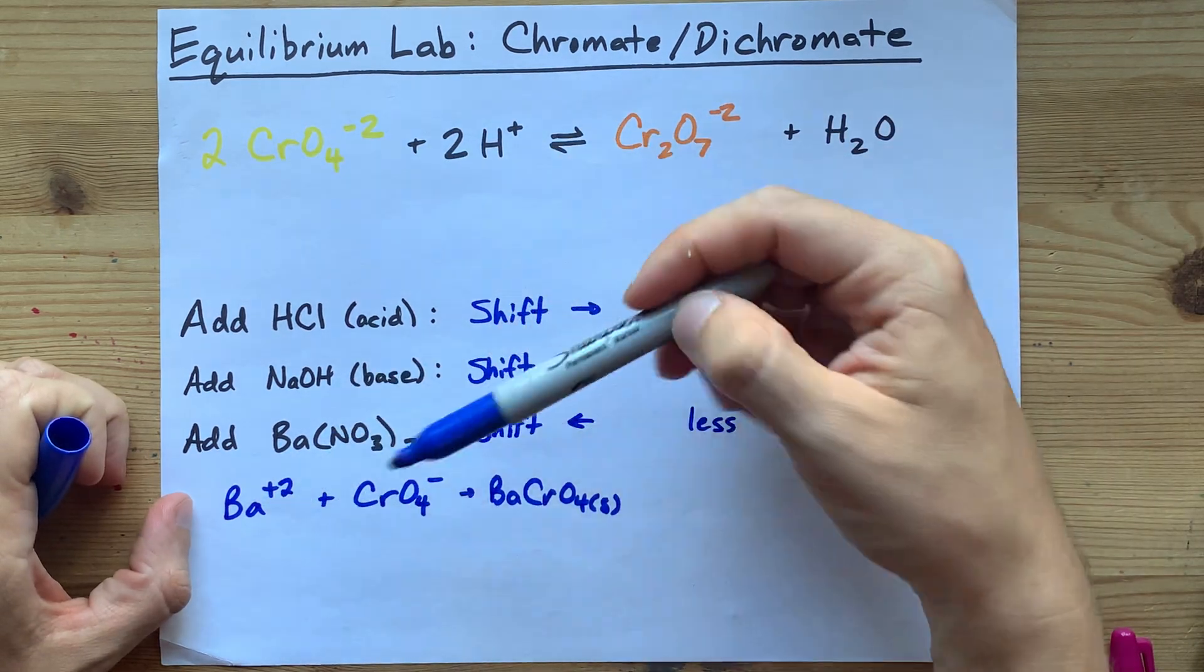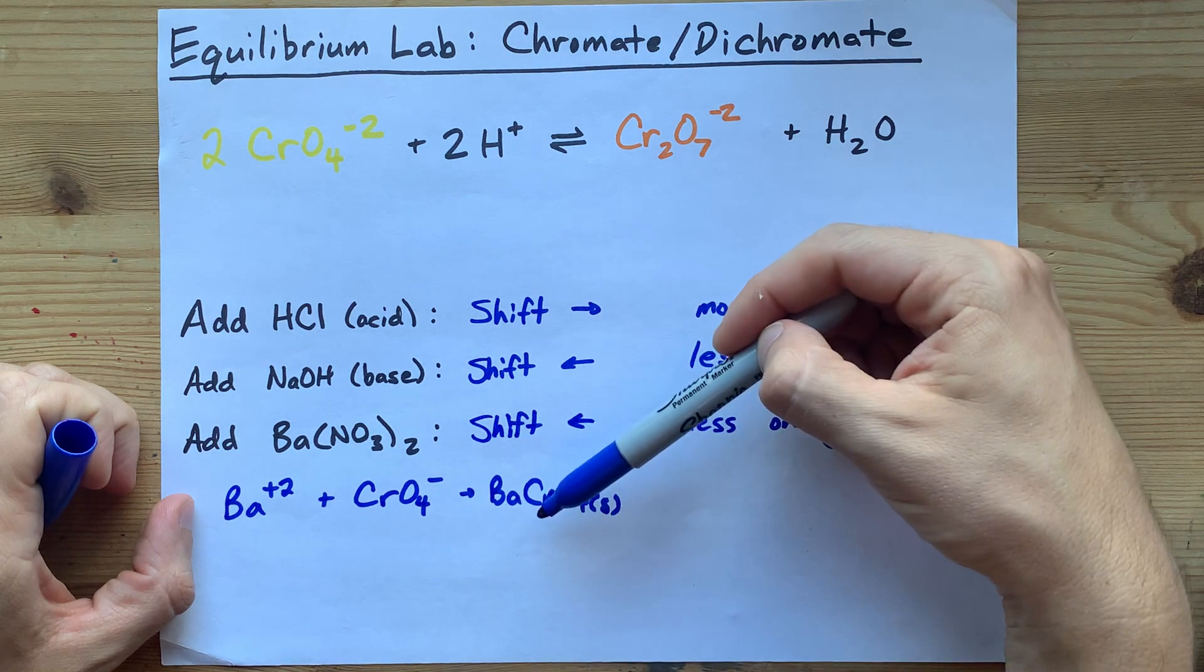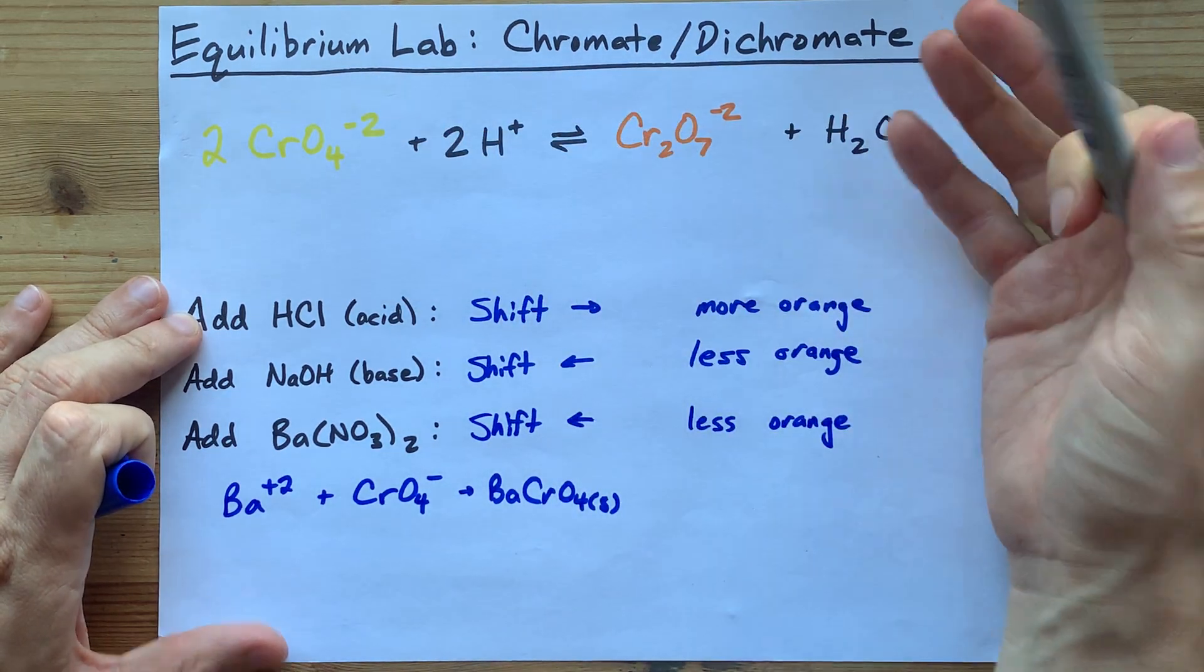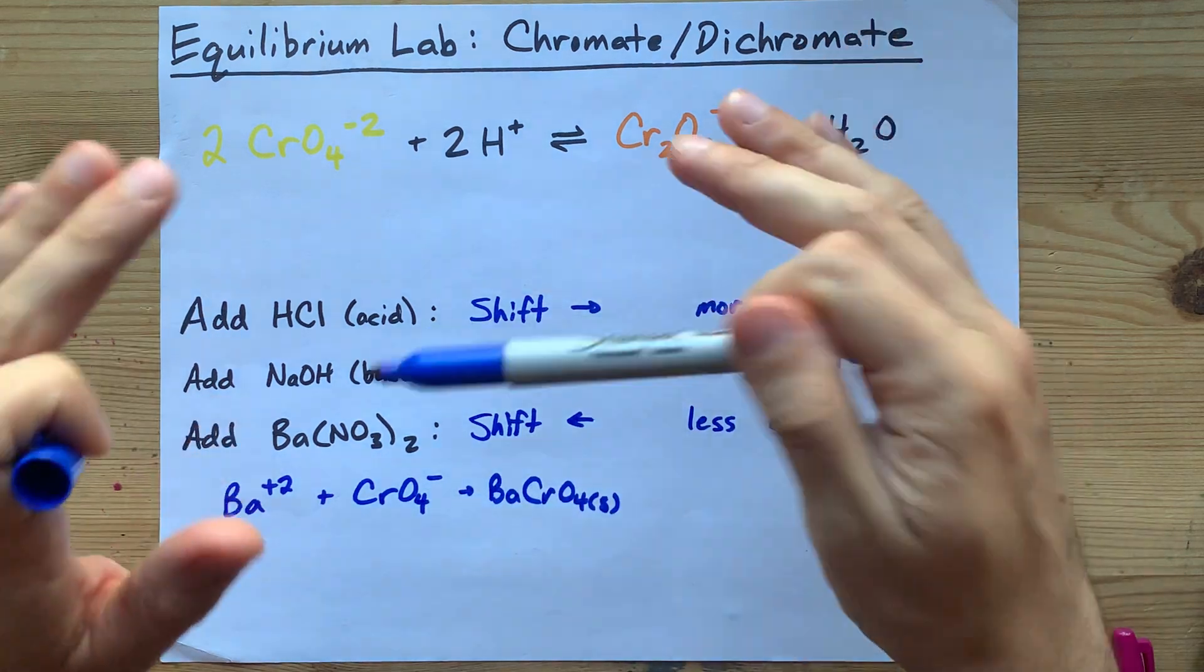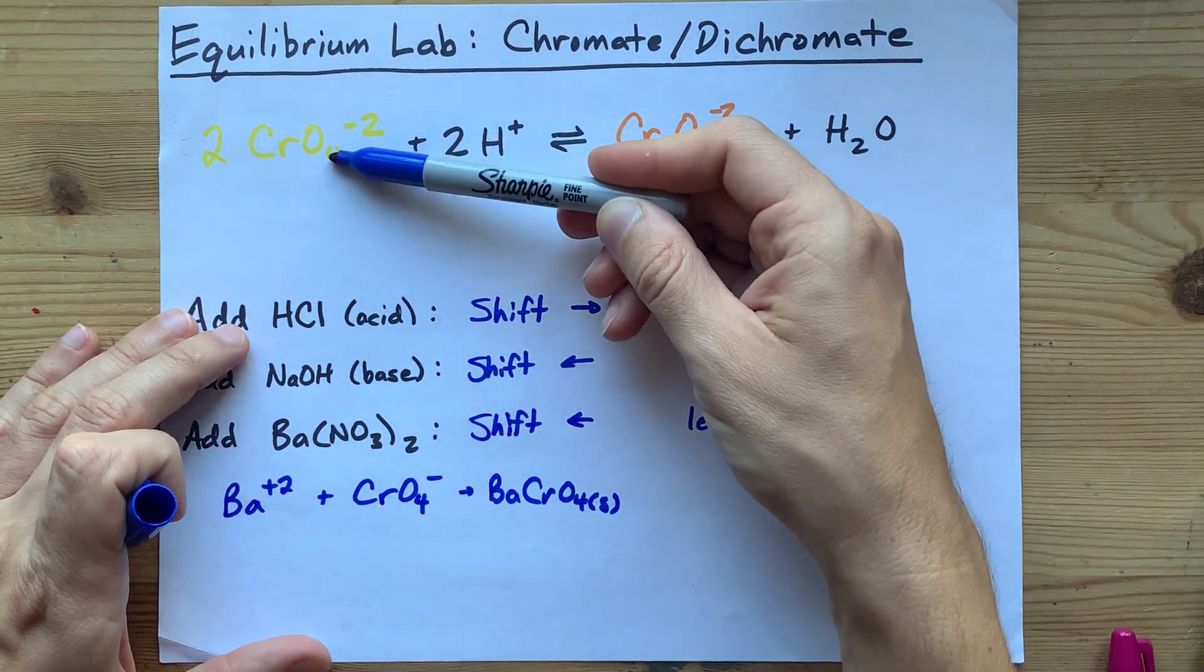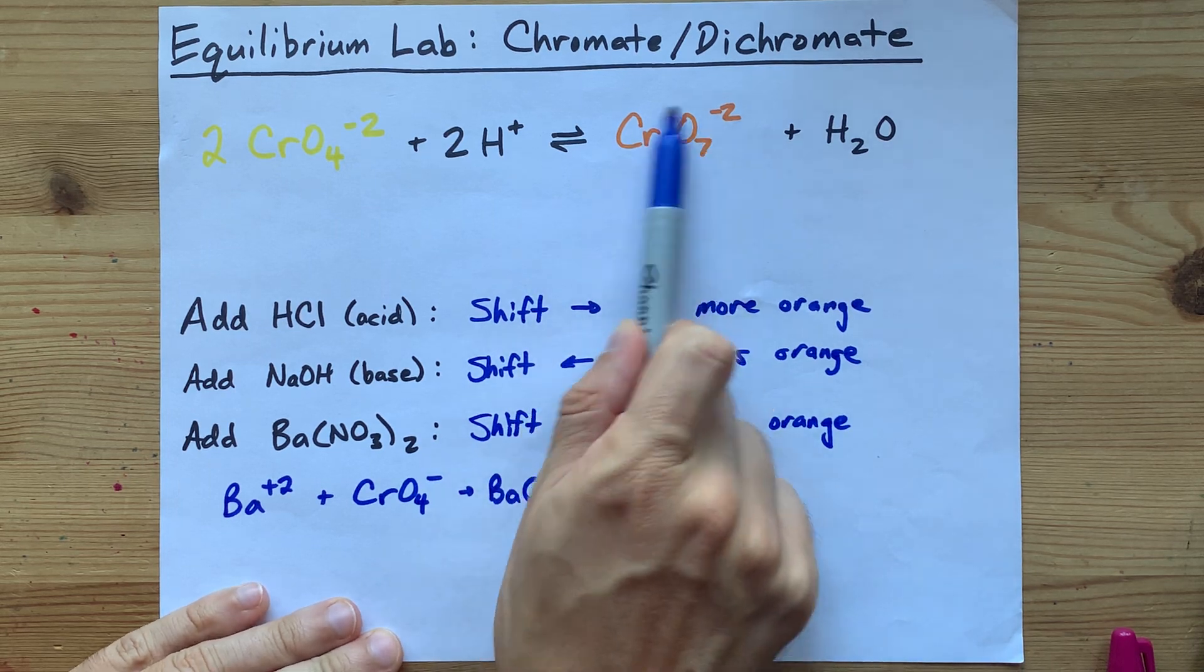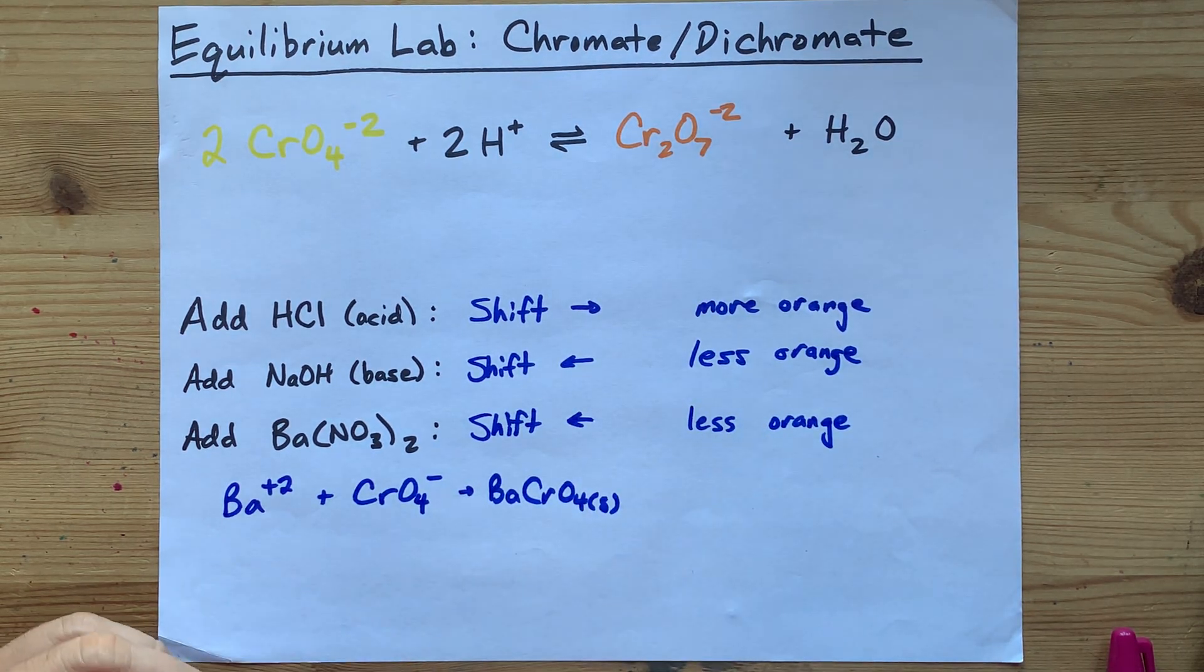Now, I realize we're taking away CrO4 in this precipitation reaction, but then we're going to reform some of it. You still won't get to the same level of yellow that you would have had before. Le Chatelier's principle says you offset the change partially. You're never going to get more CrO4 back out than you had removed with the precipitation reaction. But what matters is that some of this reacted away looks less orange.